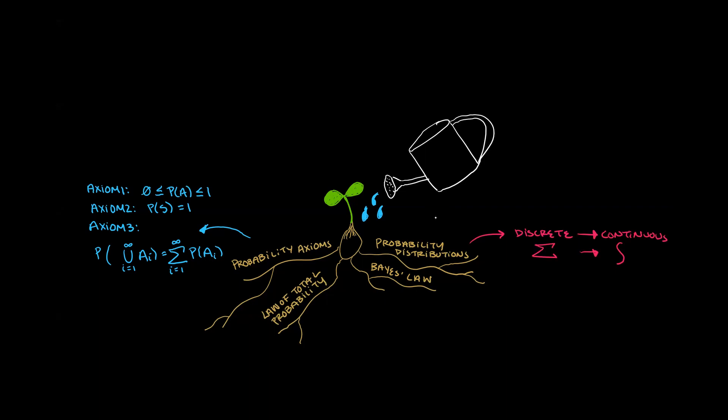One of the roots that you see here for the Bang 100 tree is the types of probability distributions. Remember, continuous distributions are often just the limits of discrete distributions. This is why you will later see an integral sign instead of a summation sign.